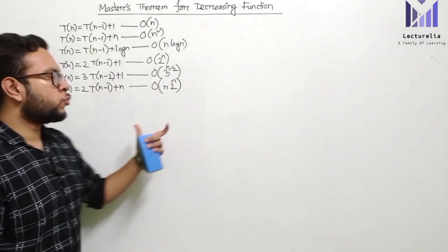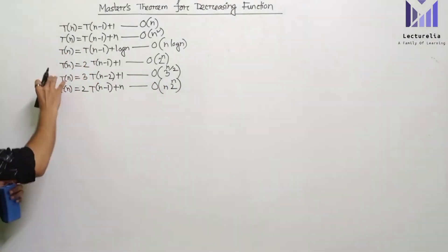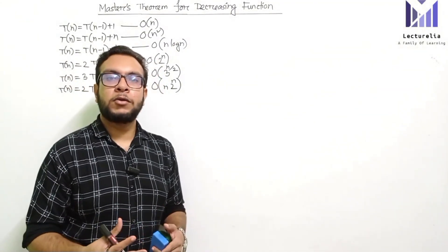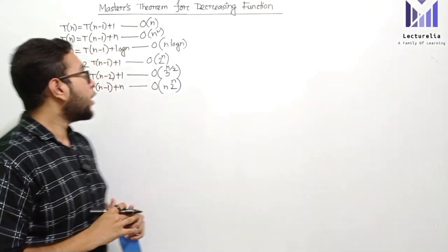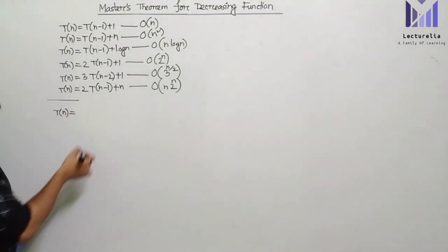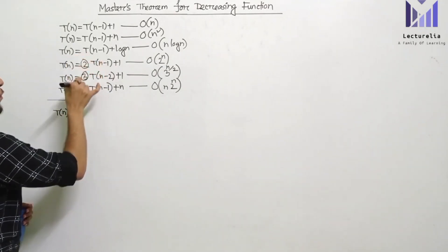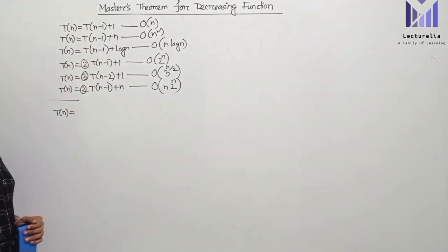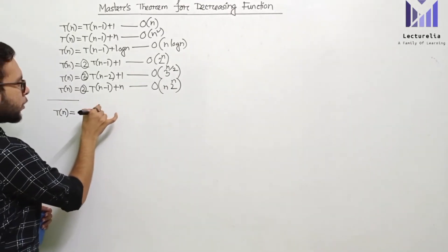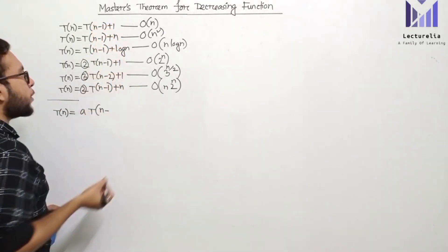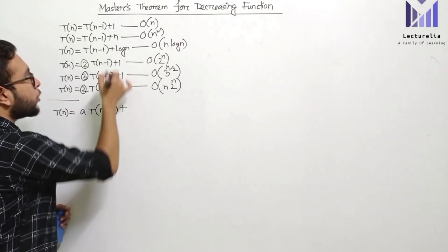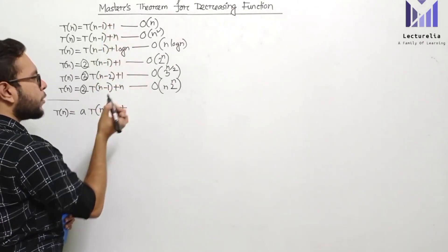So in this video, we will see a new recurrence relation. We will see T(n) = aT(n-b) + f(n). Initially, we identify the coefficient a, which is in front of T. The coefficient is a. We also identify b, the value being subtracted from n. And we identify f(n), the function being added. Here the coefficient a is equal to 0.